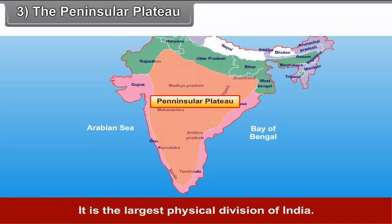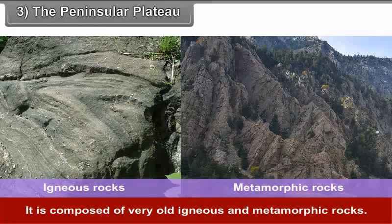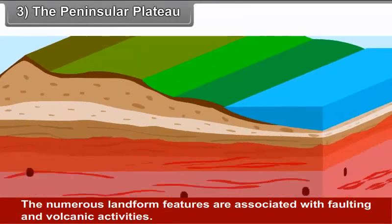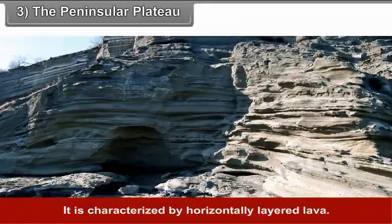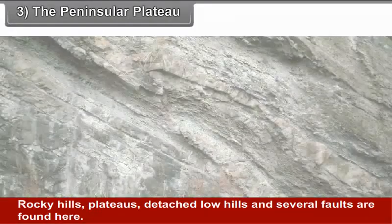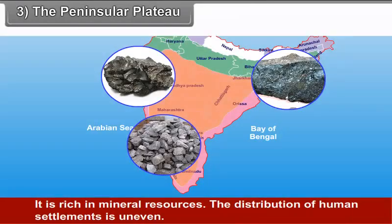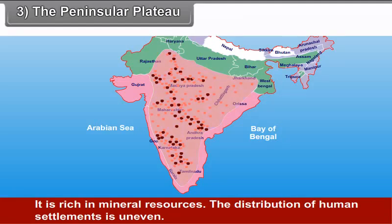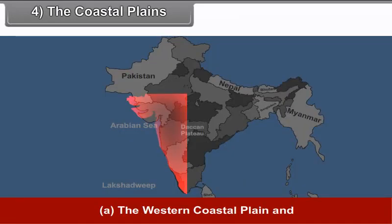The Peninsular Plateau is stable compared to the other physical divisions. It is one of the oldest land masses in the world and the largest physical division of India. This region is triangular in shape, composed of very old igneous and metamorphic rocks. The numerous landform features are associated with faulting and volcanic activities, and it is characterized by horizontally layered lava. Rocky hills, plateaus, detached low hills, and several falls are found here. This region has fertile black soil and is rich in mineral resources. The distribution of human settlements is uneven.